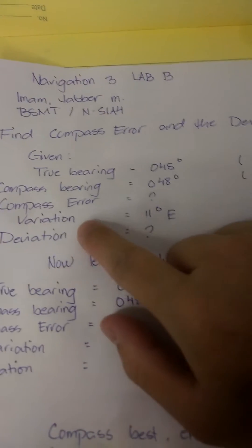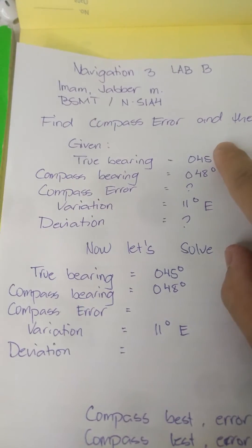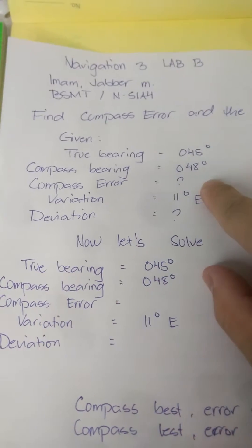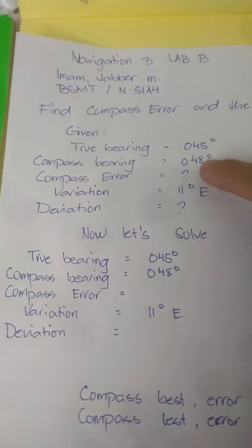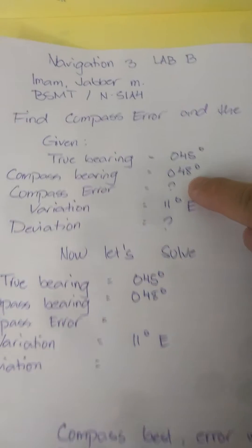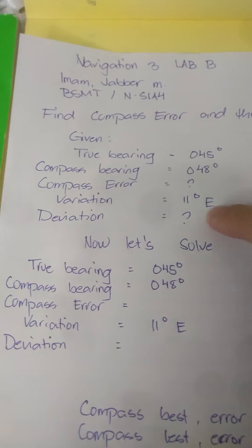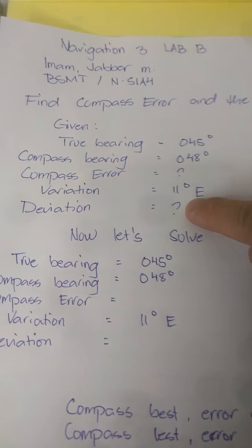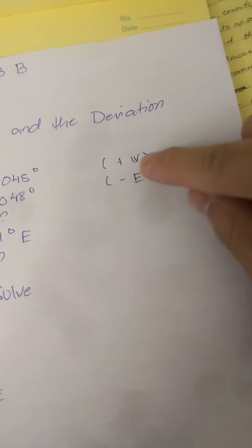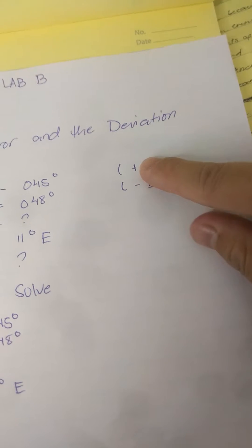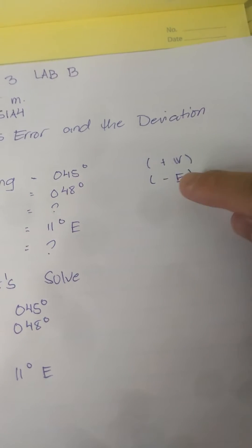true bearing is 045 degrees, and compass bearing is 048 degrees. We are finding compass error, and variation is 11 degrees east, and deviation is to be found. Remember that addition is west, and subtraction is east.